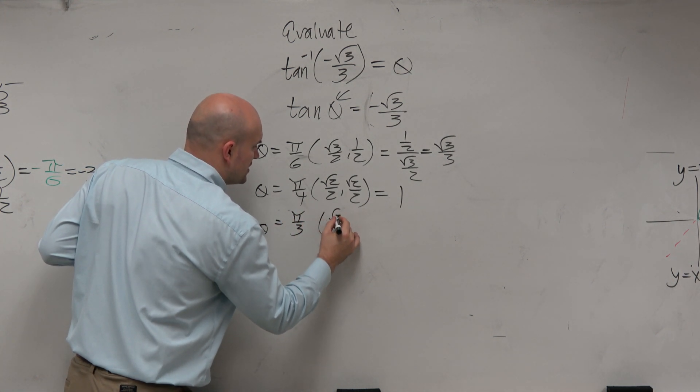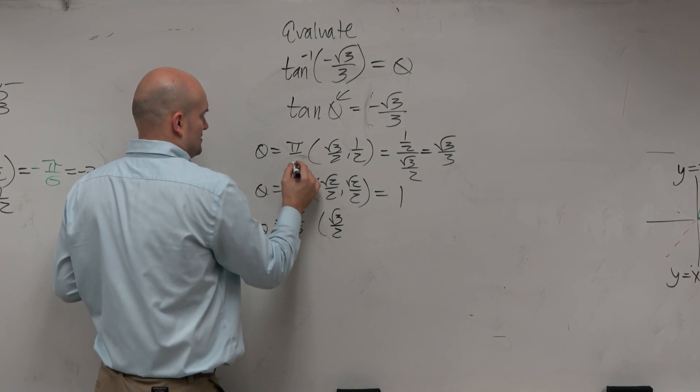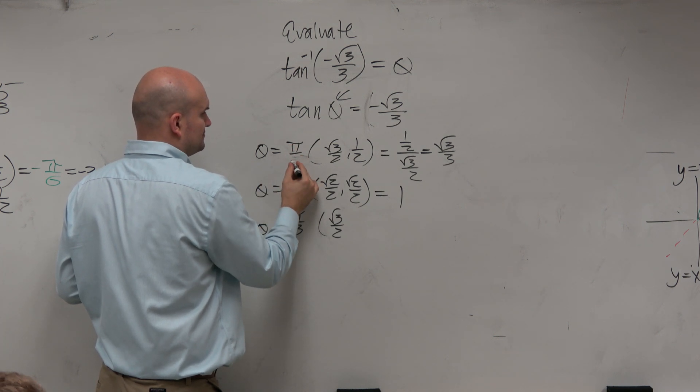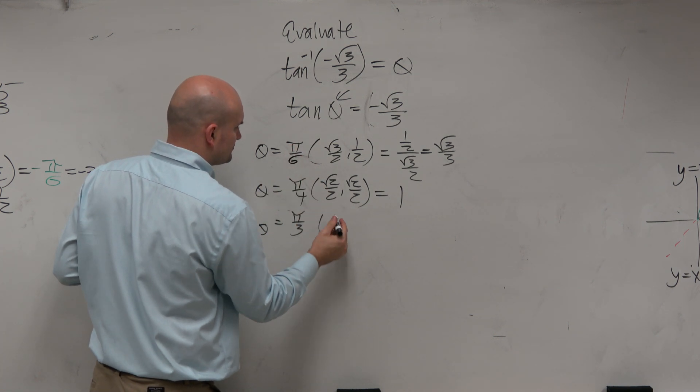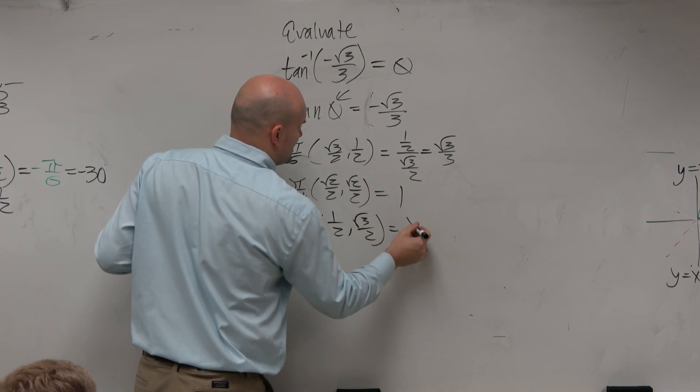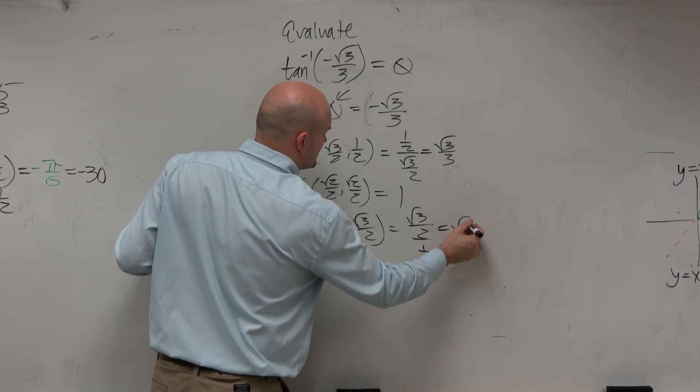Because that one was square root of 3 over 2. Oh, crap. Did I mess that up? Dang it, that did. No, this one was, yeah, that's right. I'm sorry. I wrote this one wrong. Then when you do this, you get square root of 3 over 2 divided by 1 half. And that just equals the square root of 3.